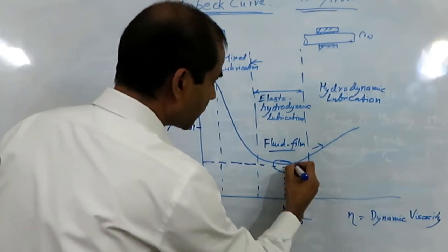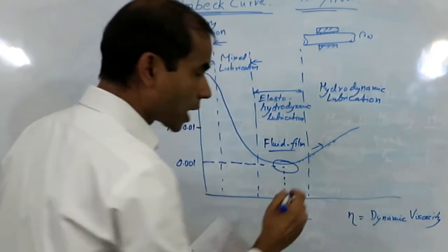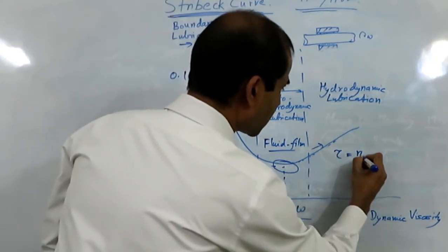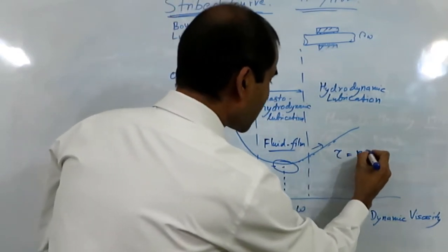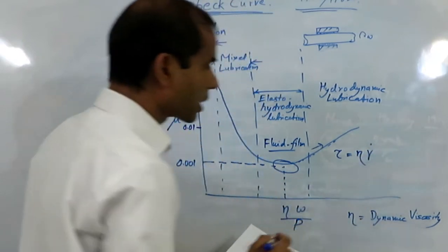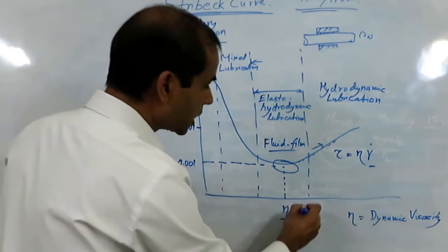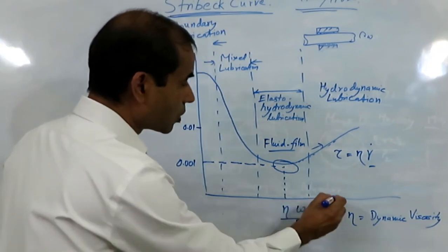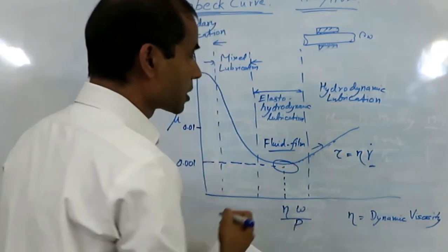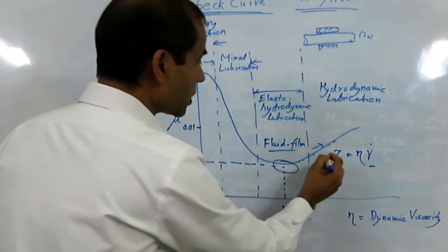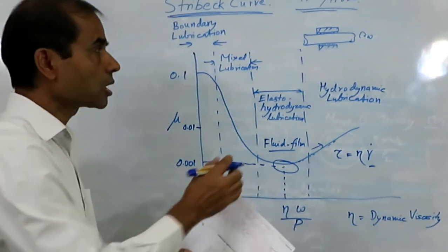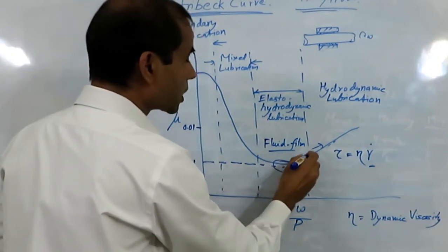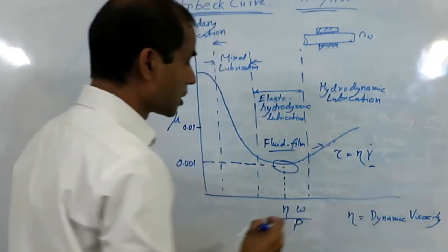As we increase the speed, there is a tendency for the coefficient of friction to rise, and that is because of the viscosity. From Newton's law of viscosity, the shear stress is equal to the viscosity multiplied by the shear rate. The shear rate increases as we increase the omega or RPM. Once we increase the omega, the shear rate changes and therefore shear stress will increase — it will take more force to shear the lubricant — and that is why the coefficient of friction will tend to rise as we increase the speed further.